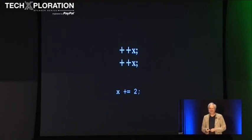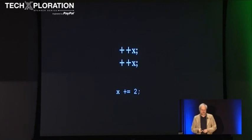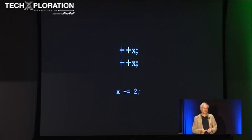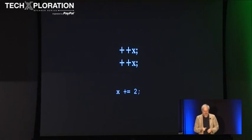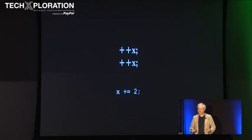I'm guessing someone had written ++x, which is the right way to write it, and then someone else observed that there was an off-by-one error, so they came in and did it again. If the original guy had written x += 1, then the second guy would have changed it to a 2,